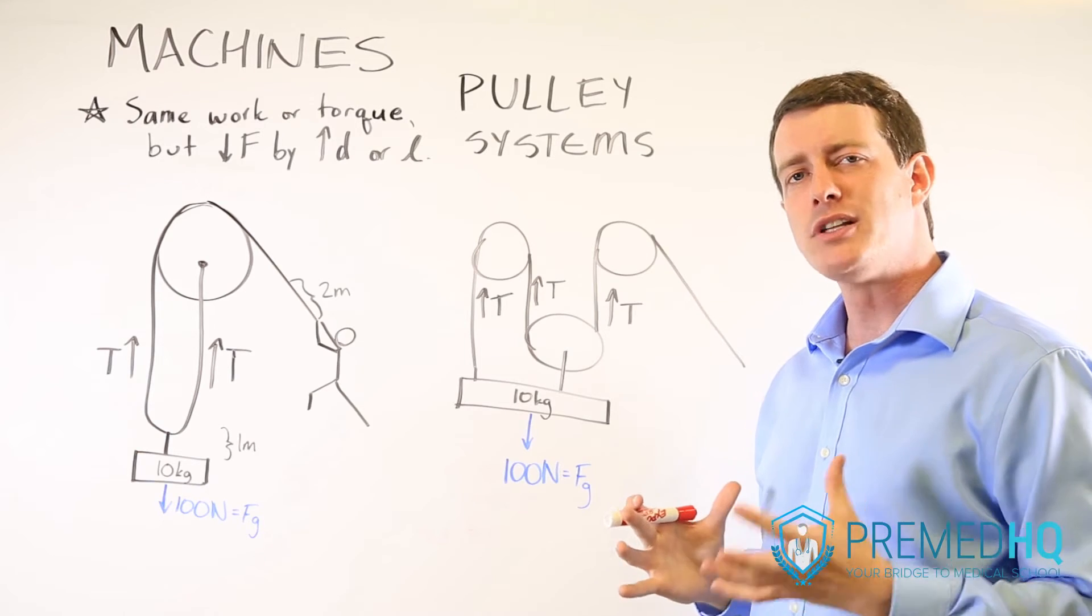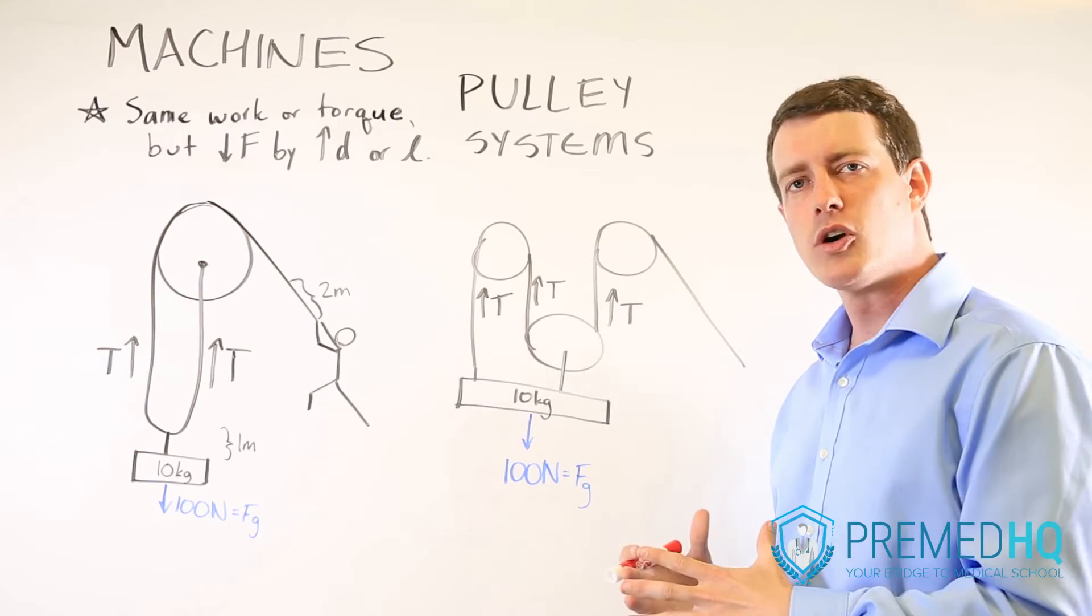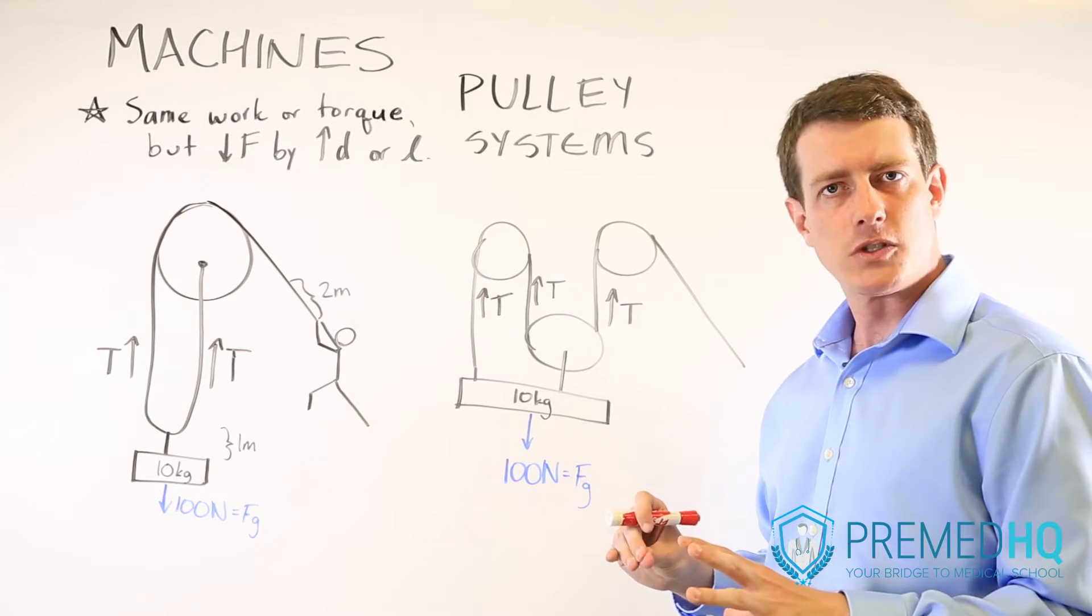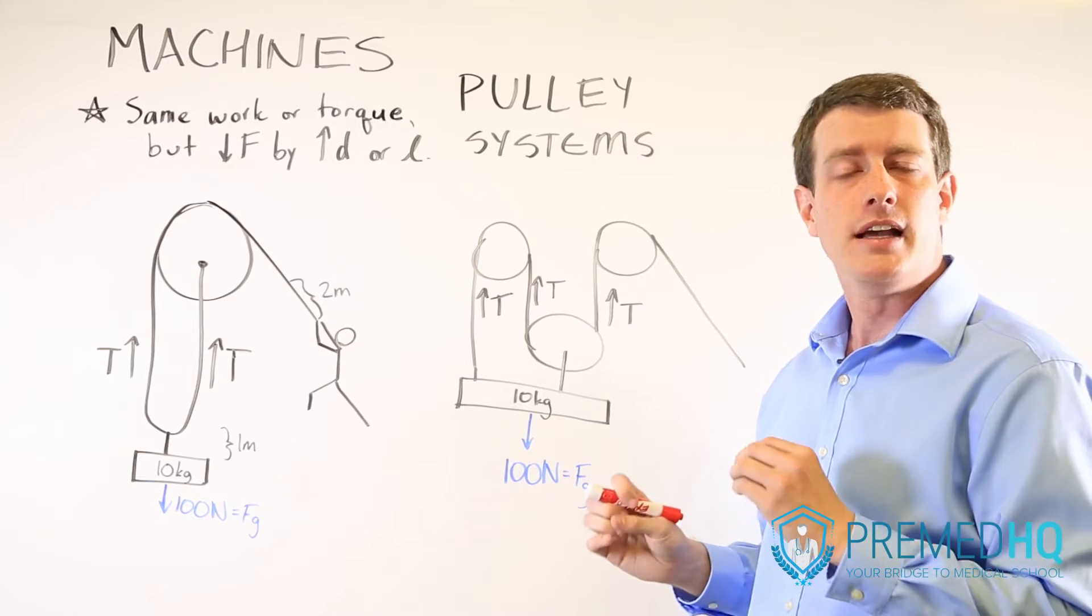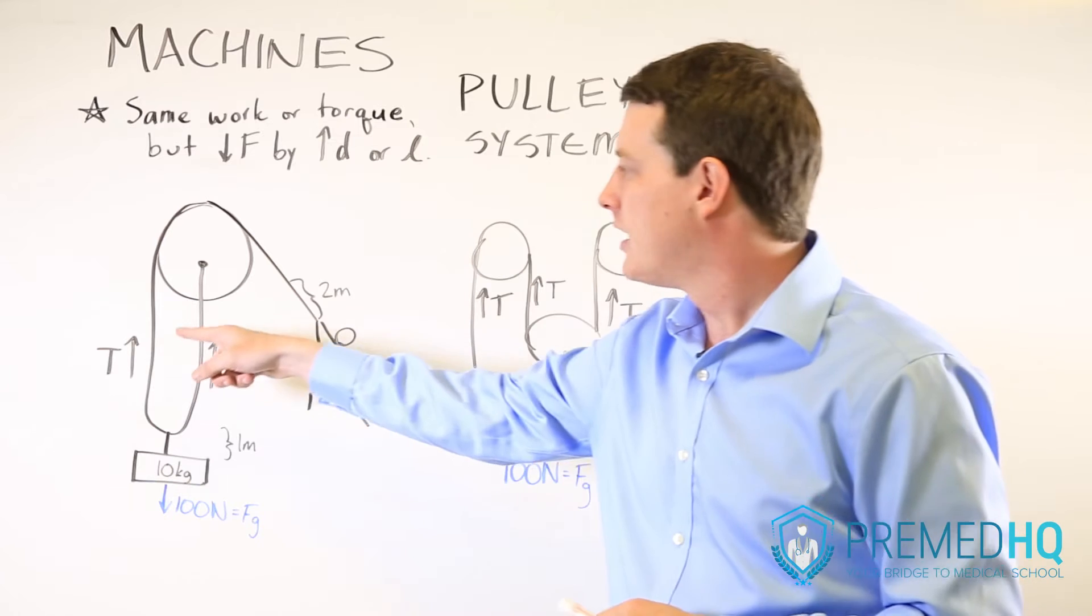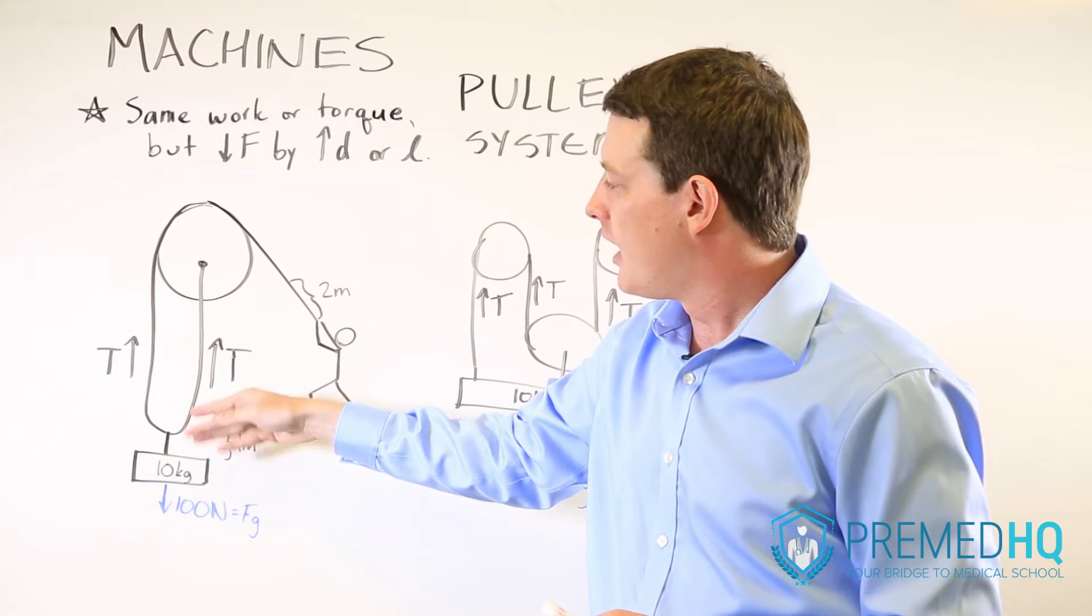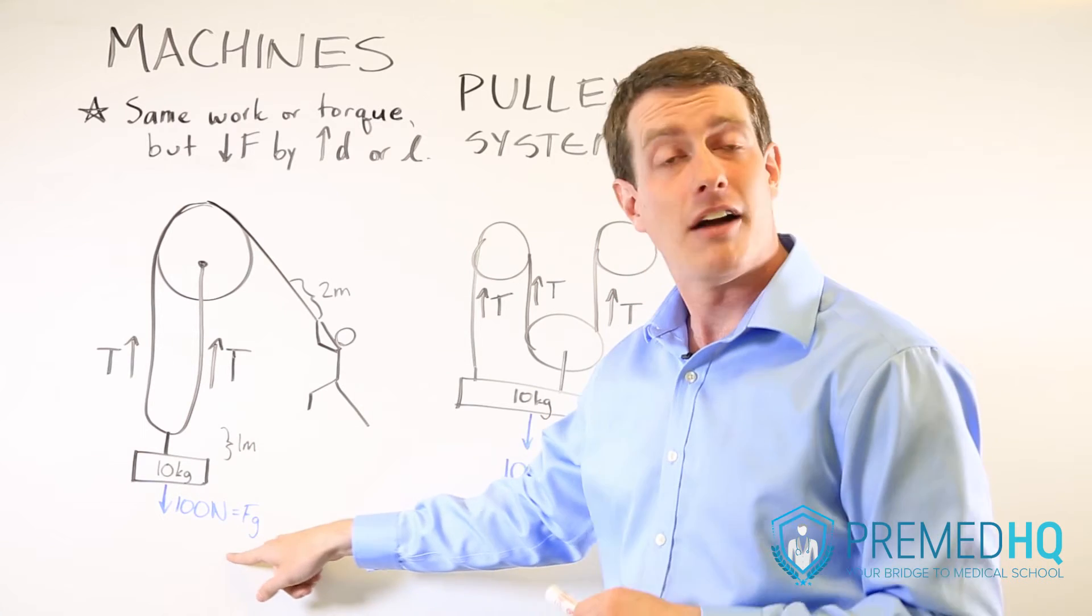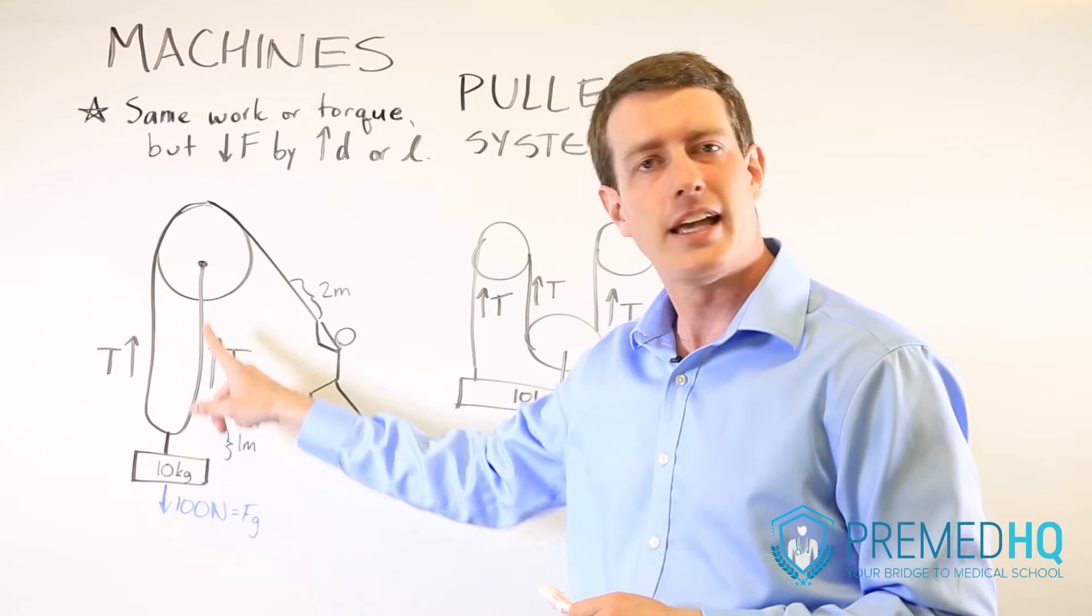Because of that, pulley systems allow you to again perform a lot of work with a smaller amount of force by doubling up or tripling up or quadrupling the effect of the tension force. And so here you'll notice that because you have two stretches of rope here that are going against the gravitational force of 100 Newtons, that tension is basically counting twice.